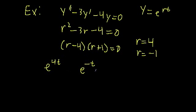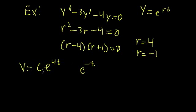Once we've found our two solutions, we need to check that they're linearly independent. I'll introduce a formal test for this in a later video, but for now we can see these two are linearly independent because they have different exponents — we can't scale one to cancel out the other for all values of t. So the general solution is simply a linear combination of the two: y equals c₁·e^(4t) plus c₂·e^(-t).